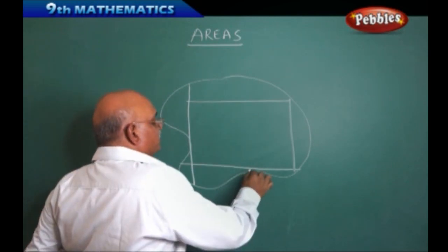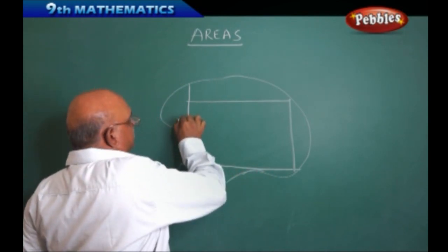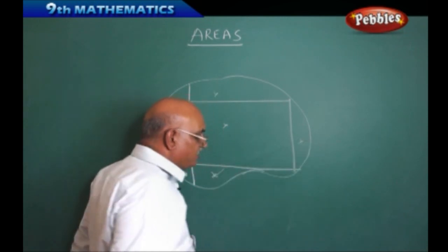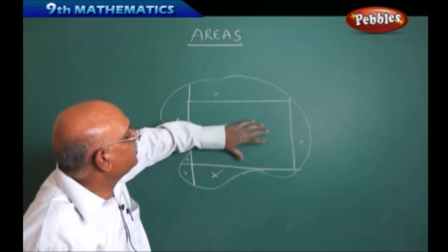Similarly, I can find out the area of this portion, this portion, this and this. Adding all these things, we are going to get the area of the total.